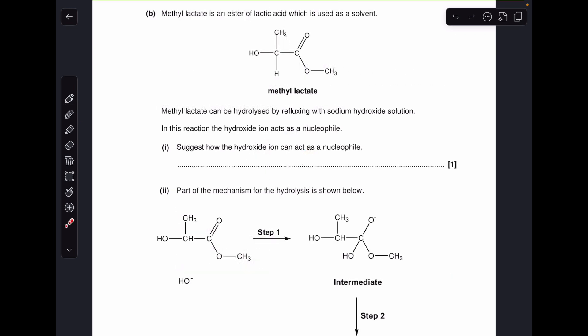Moving on to part B, which deals with this mechanism. So the first thing we've got to do is suggest how the hydroxide ion can act as a nucleophile. So all we need to do really is give the definition for the nucleophile. So we can either say the hydroxide ion can donate an electron pair, or we can say that it can donate a lone pair.